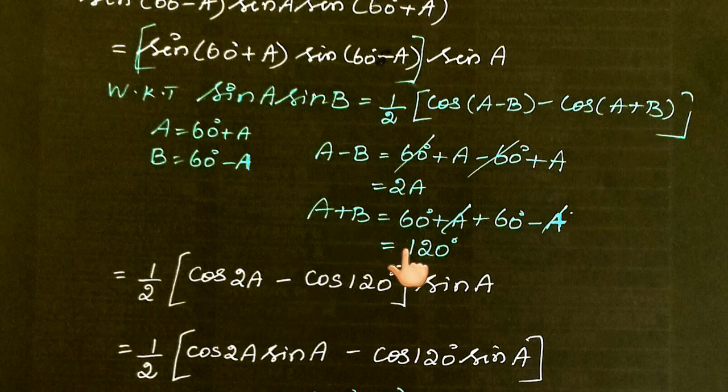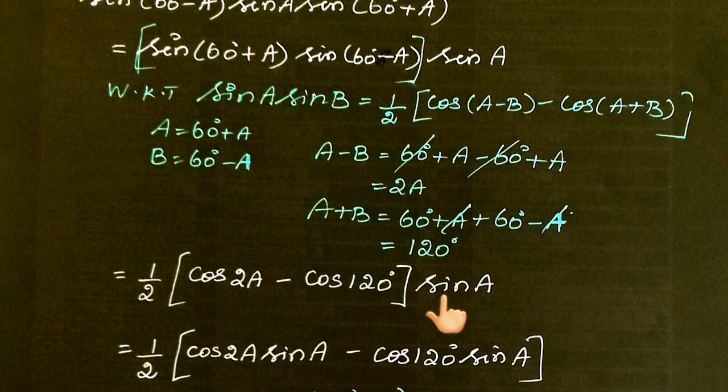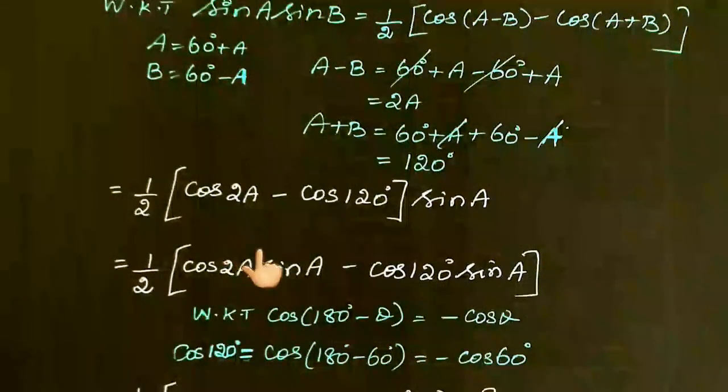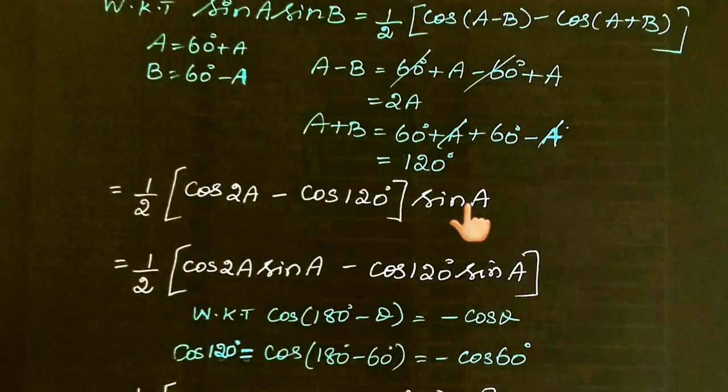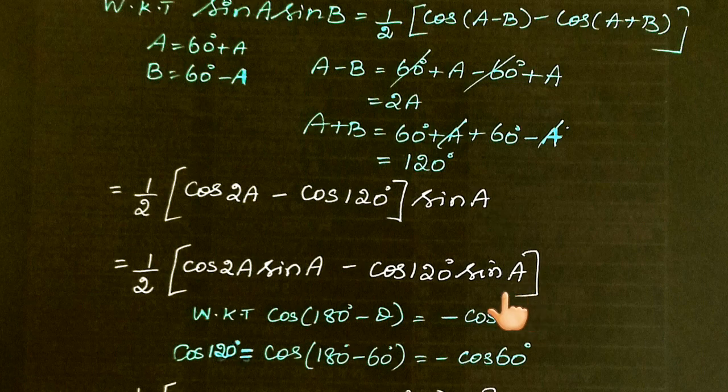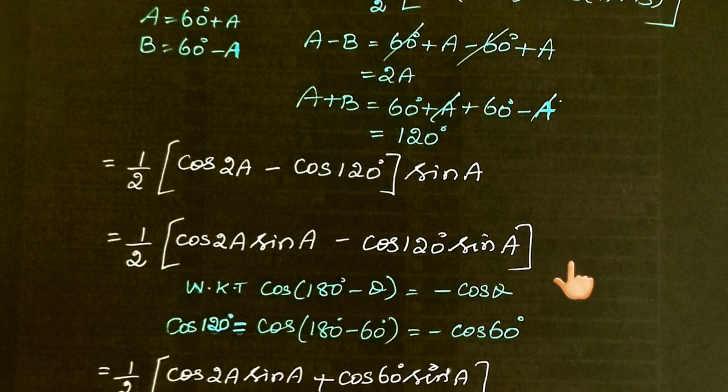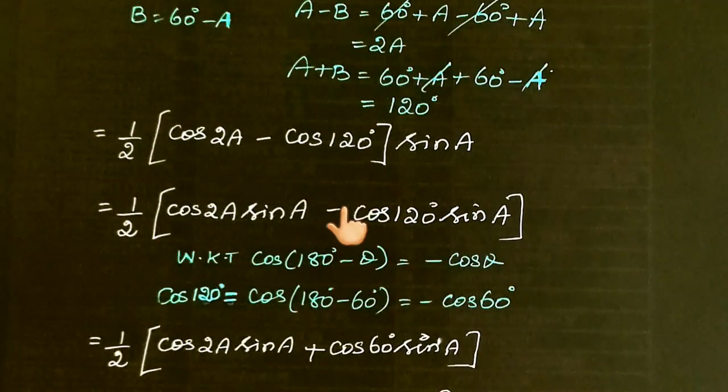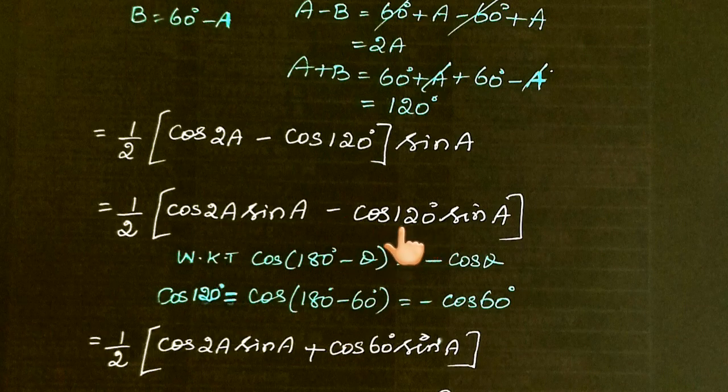Now we need to substitute the value of cos(120°). We can multiply sin(A) inside the bracket: cos(2A)sin(A) - cos(120)sin(A).